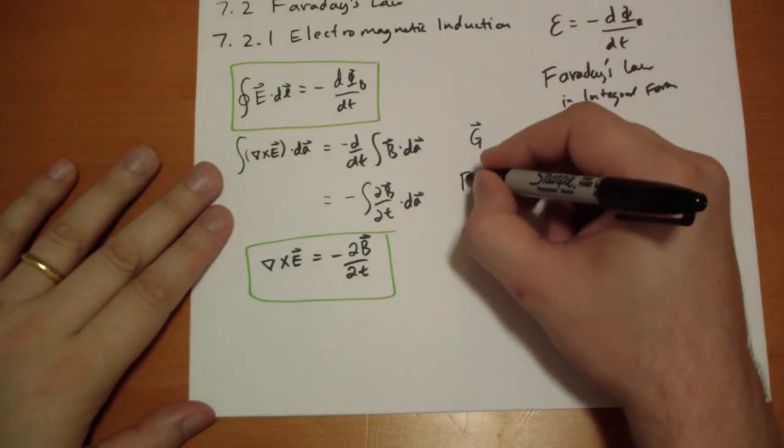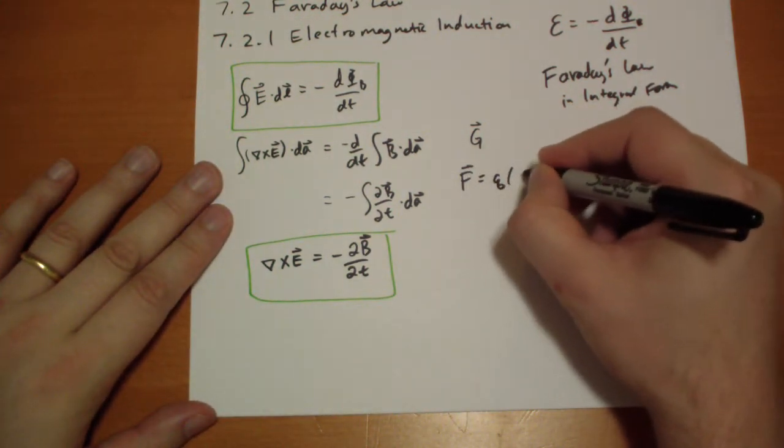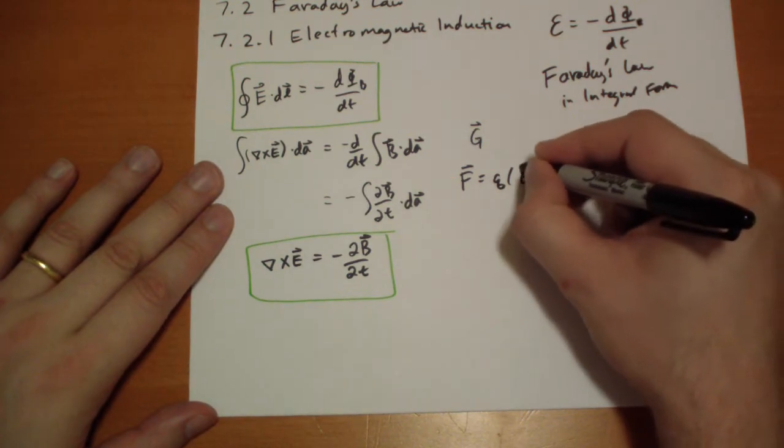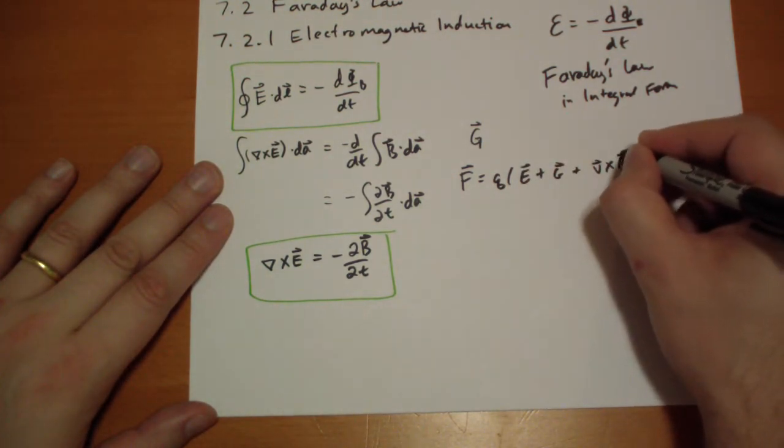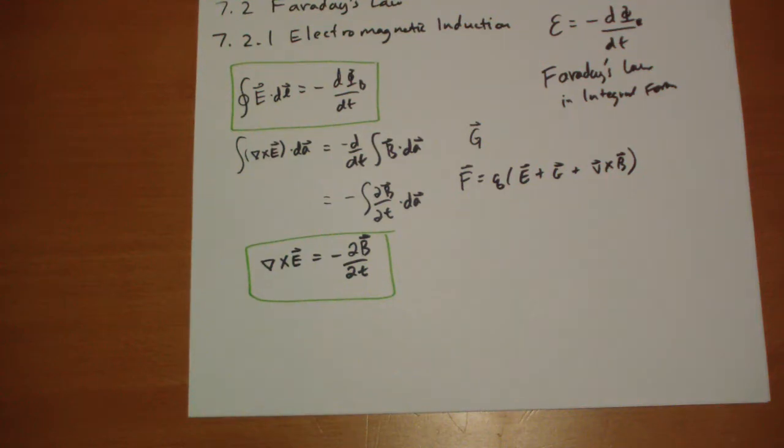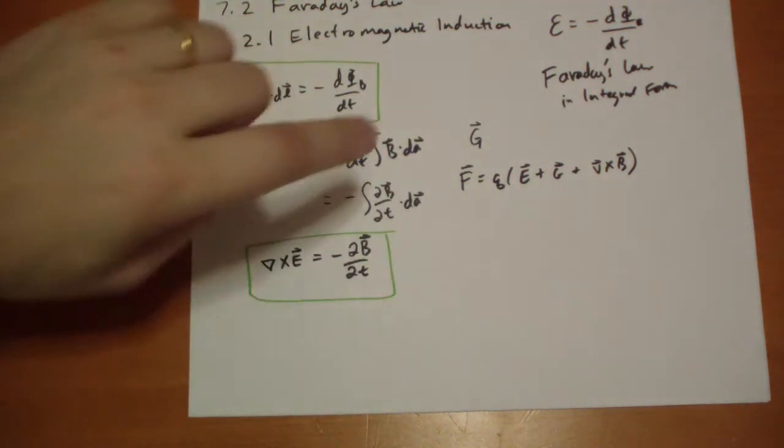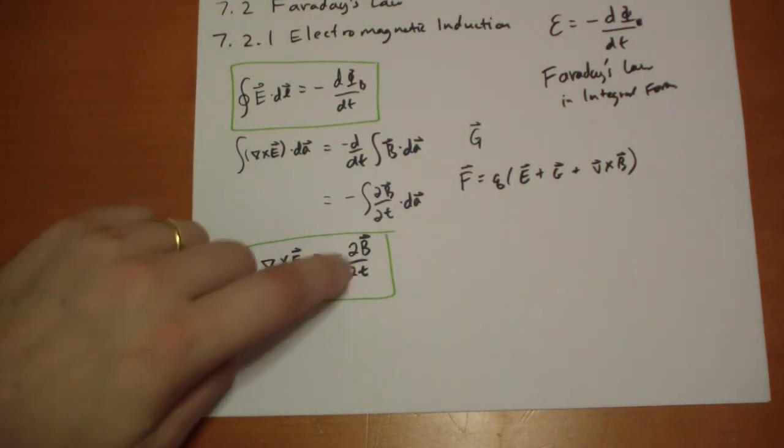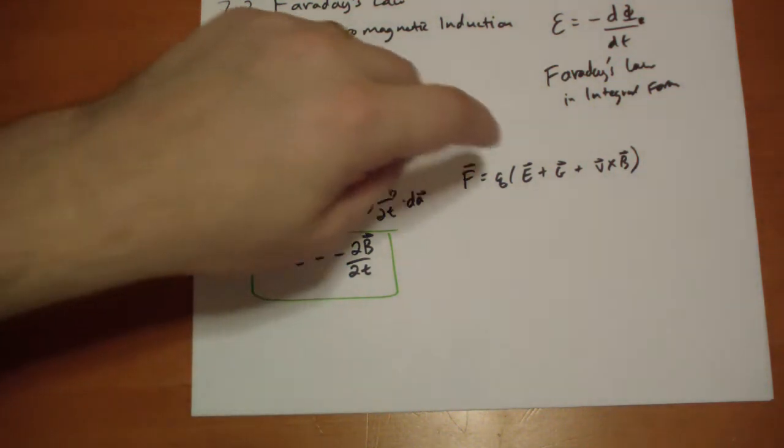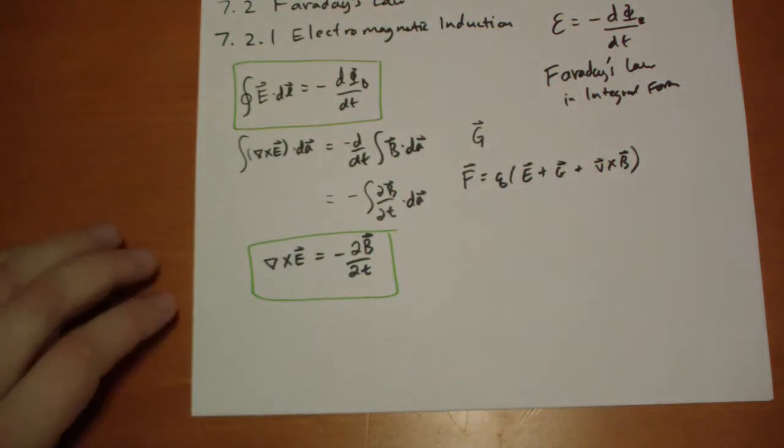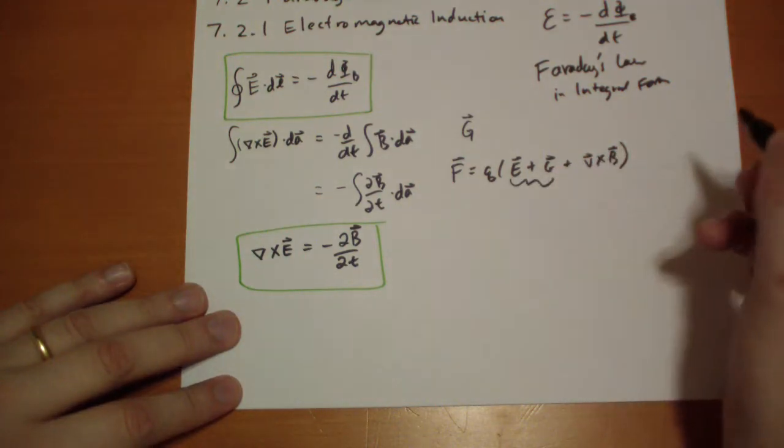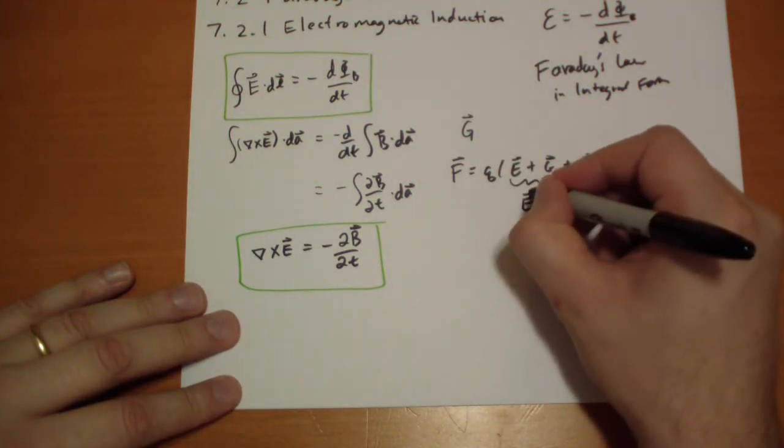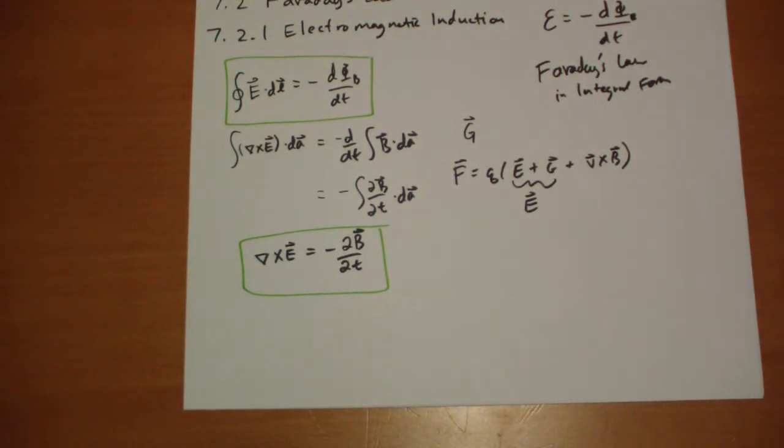...then Lorentz's Law becomes Q(E + G + V cross B). The activity of this field due to the change in the magnetic field is just added like that. Rather than think of these as two separate ones, you just add them together and you get E.